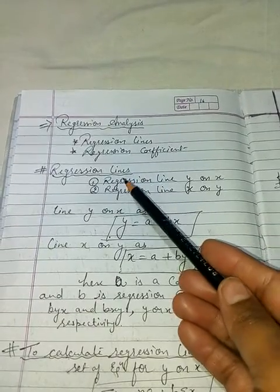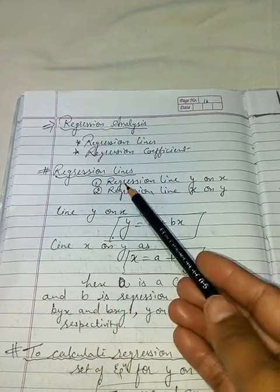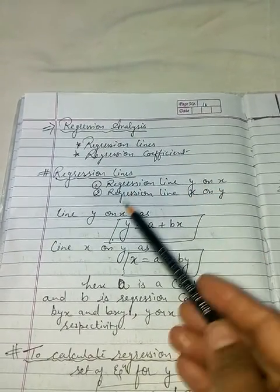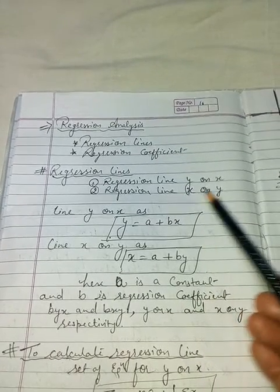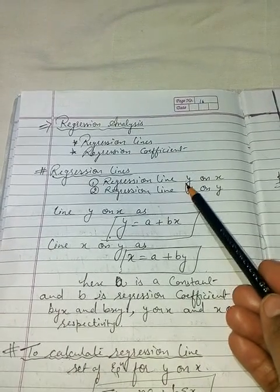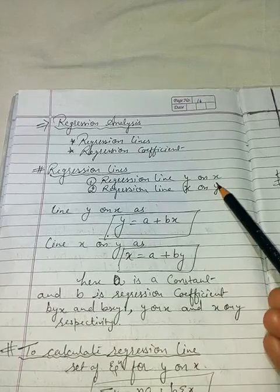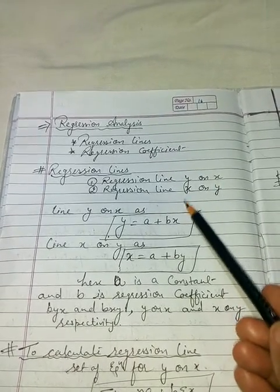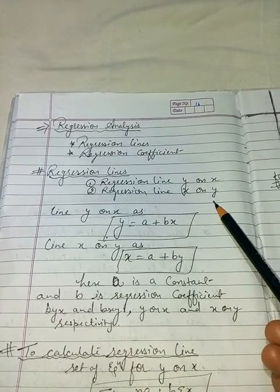In regression analysis there are two types of lines. One is y on x and the second is x on y. In y on x, y is the dependent variable and x is the independent variable. In x on y, x is the dependent variable and y is the independent variable.